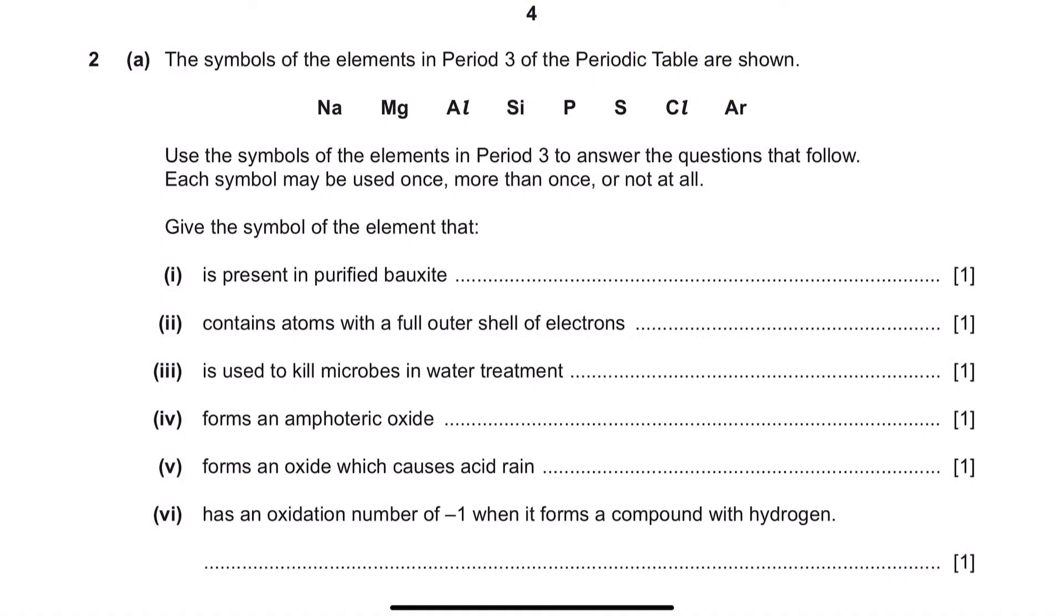Question 2. The symbols of the elements in period 3 of the periodic table are shown. Use the symbols of the elements in period 3 to answer the questions that follow. Each symbol may be used once, more than once or not at all. Give the symbol of the element that, part 1,